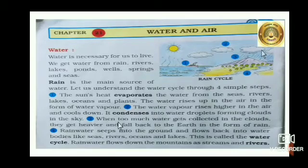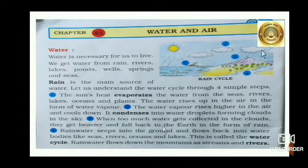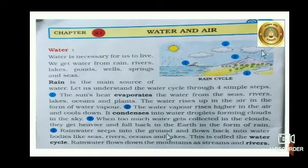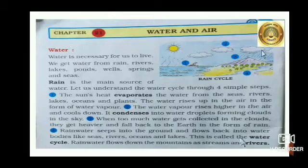Third, when too much water gets collected in the clouds, they get heavier and fall back to the earth in the form of rain. Fourth, rain water seeps into the ground and flows back into water bodies like seas, rivers, oceans and lakes. This is called the water cycle.